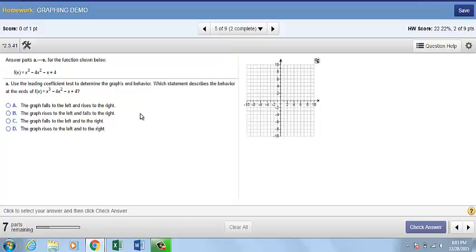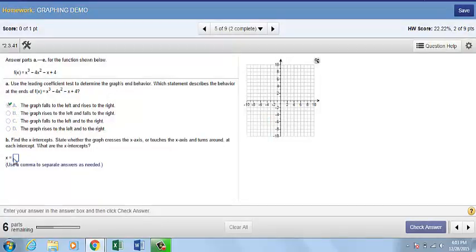This next function is a polynomial function. Before you graph it, you will respond to questions regarding the graph's end behavior and intercepts. The graph is the actual function, which will be 1.